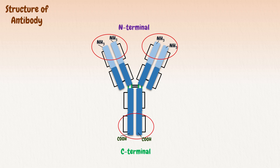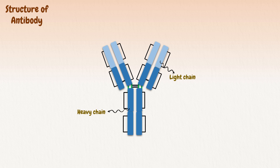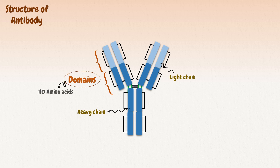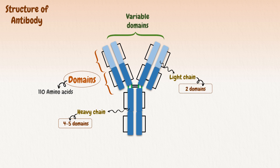Further analysis of antibody structure shows that both the heavy and the light chains have folded, repeating substructures called domains. These domains are regions of approximately 100 to 110 amino acids within the heavy and light chains. The heavy chain has four or five domains, and the light chain has two domains. The domains at the N-terminal of the heavy and light chains are called the variable domains, presented as VH and VL, respectively.